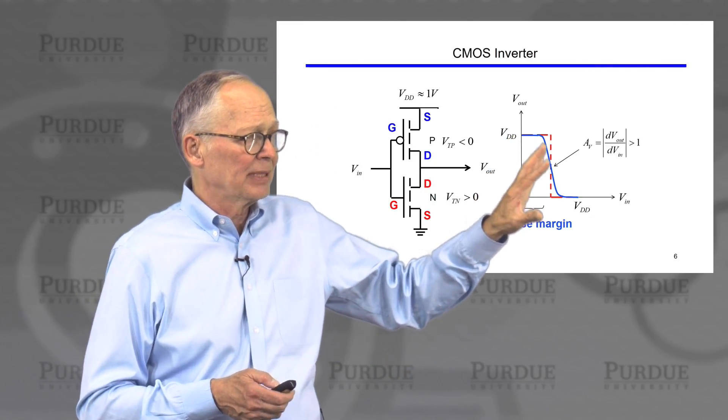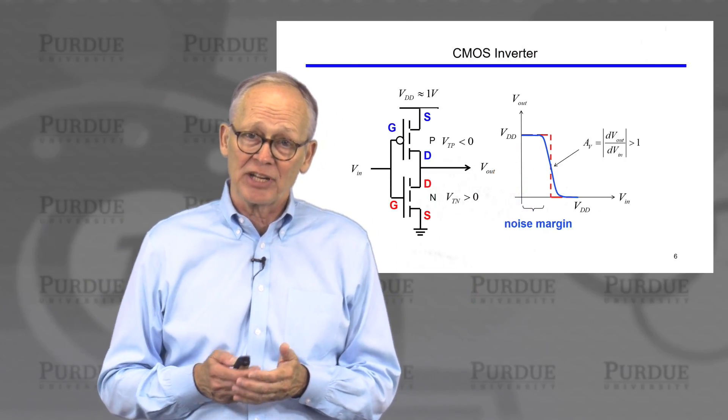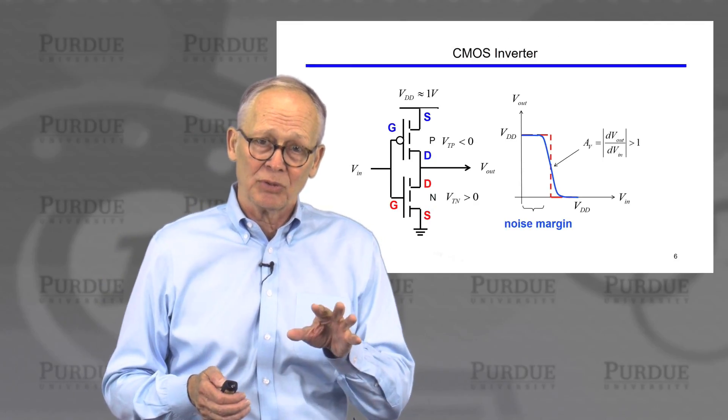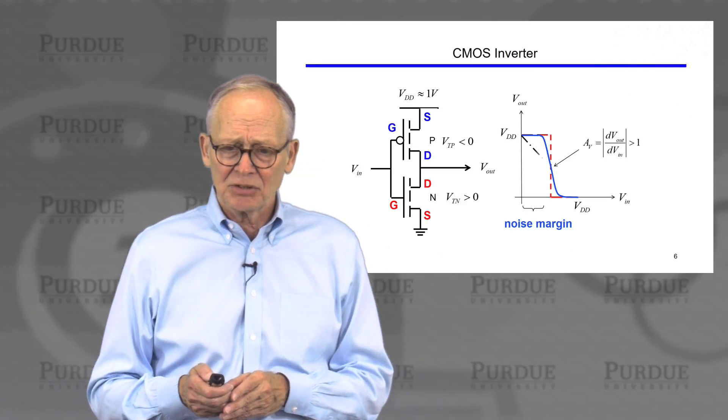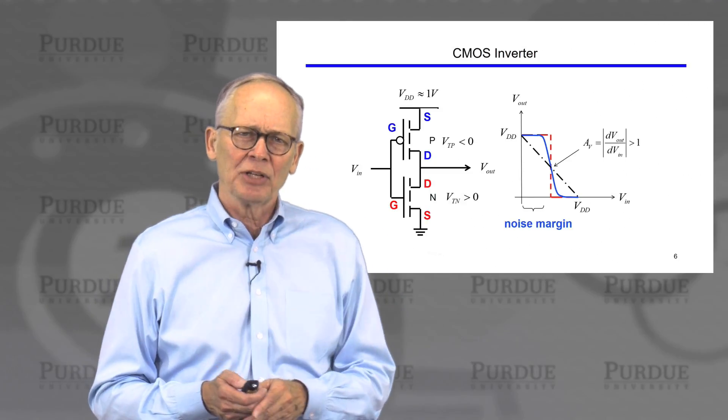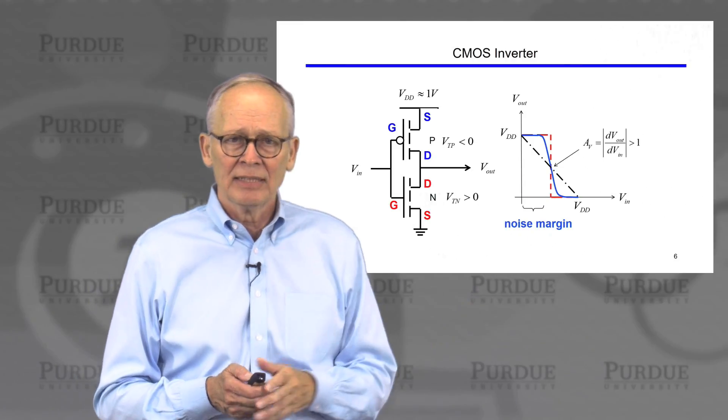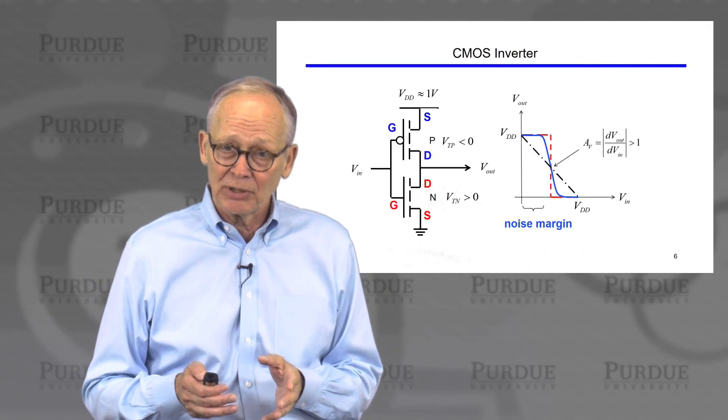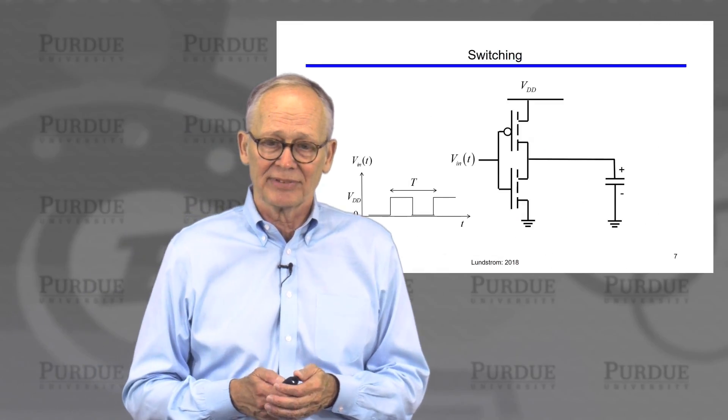And the steepness of this characteristic is a measure of the voltage gain, dVout/dVin. It's how much the output voltage changes when the input voltage changes. The magnitude of that needs to be greater than one, because if it's one, you can see from this dashed line here, my noise margins would disappear. If I have no noise margins, errors accumulate, and we can't do digital logic with large numbers of gates.